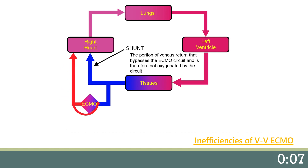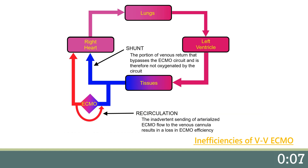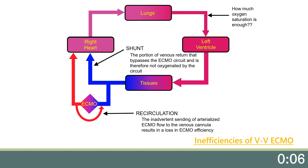The second inefficiency of V-V ECMO support is called recirculation, which is the inadvertent diversion of oxygenated or arterialized ECMO blood flow to the venous cannula in a partial closed loop, resulting in loss of ECMO efficiency. This diversion of highly oxygenated ECMO blood back to the venous cannula will cause the SVO2 reading on your ECMO circuit to be falsely elevated. Clinically, what you may see at the bedside is the ECMO patient drainage tubing may become bright red while the patient's SAO2 may begin to drop. Due to the respiratory disease in these patients, coupled with the inefficiencies of V-V ECMO, it is likely that these patients will not have a normal SAO2 even during ECMO.